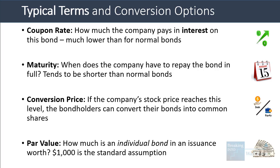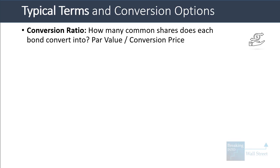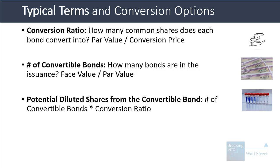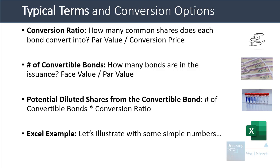The par value is how much an individual bond in a convertible bond issuance is worth — $1,000 is the standard assumption for US-based companies. The conversion ratio tells you how many common shares each bond converts into: it's the par value divided by the conversion price. The number of convertible bonds is the face value divided by the par value. And the potential diluted shares from the convertible bond is the number of convertible bonds times the conversion ratio. Let's go into Excel to see what this looks like.